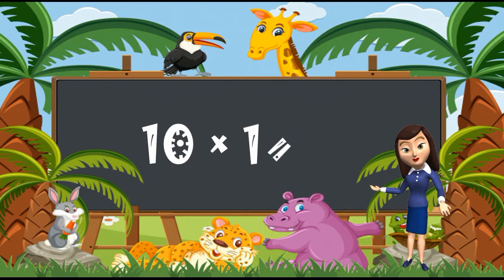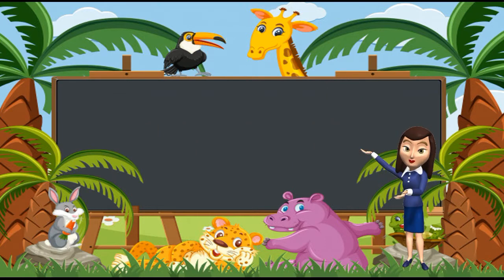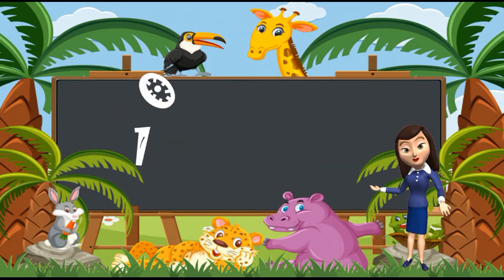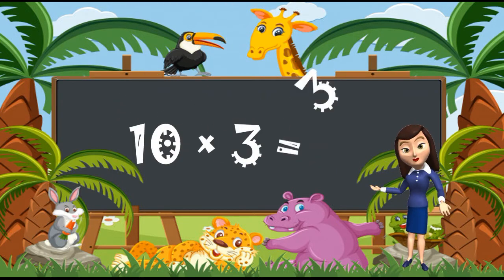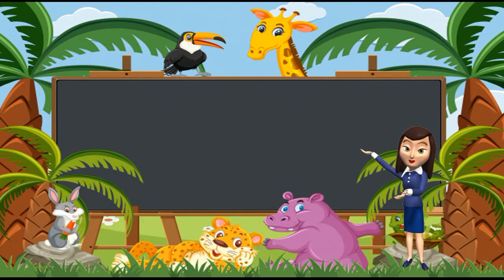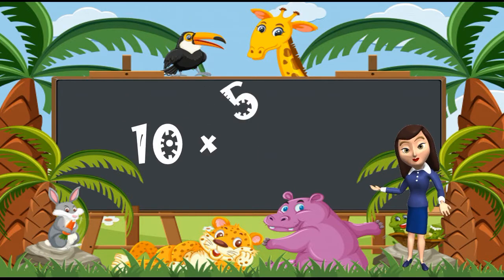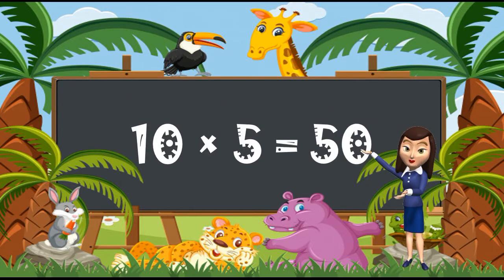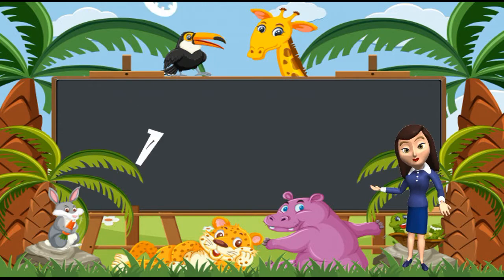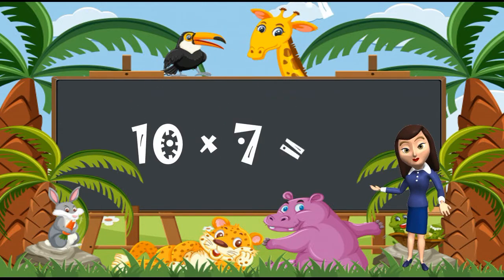10 ones are 10. 10 twos are 20. 10 threes are 30. 10 fours are 40. 10 fives are 50. 10 sixes are 60.